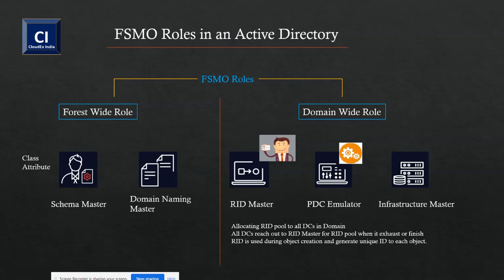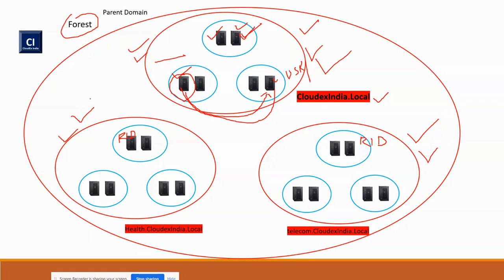RID master is also responsible for moving objects from one domain to another. If you move an object from a parent domain or child domain to another domain, it changes the RID identification of that object as well.